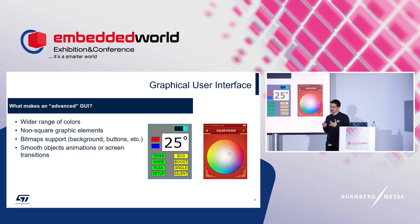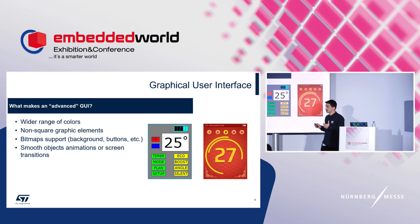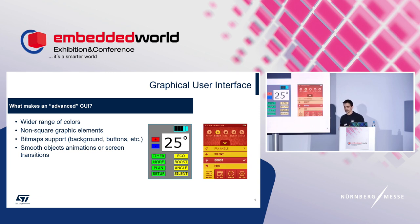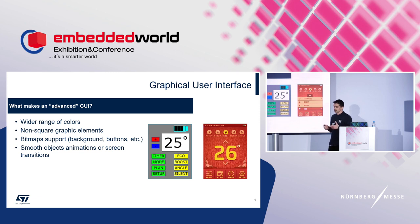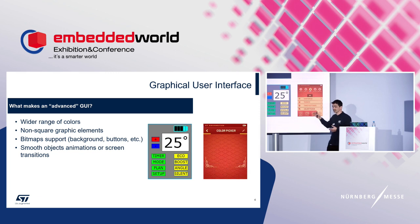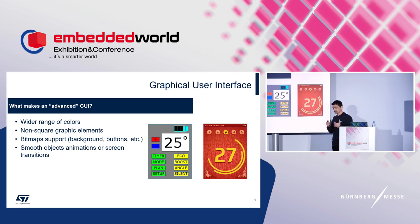What makes a nicer user interface? This is the same information presented differently — with a larger range of colors. Here we have only 16 possible colors, whereas with a 16-bit or 24-bit color depth we can have a much larger range. An advanced user interface also has non-square graphic elements. Imagine checking the temperature every day and seeing only square elements — we certainly prefer something smoother, more smartphone-like.